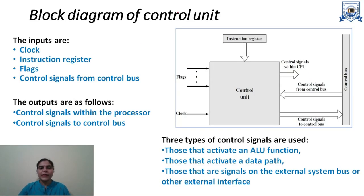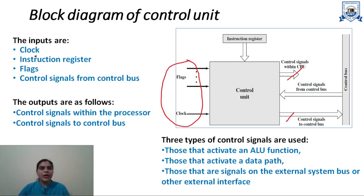Here is the block diagram of the control unit. As you can see in this figure, the control unit has some inputs and some outputs. Inputs are clock, instruction register, flags, and control signals from the control bus. Outputs are control signals within the processor and control signals to the control bus.